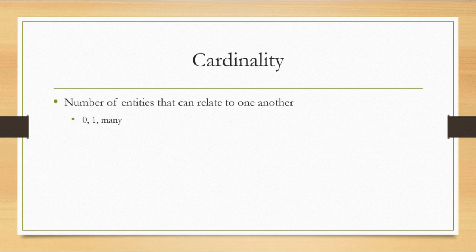Cardinality identifies how many entities can relate to one another. The valid values are zero, one, or many. For example, a class can have zero, one, or many students enrolled — if we're doing new enrollments, we create a class that initially has no students enrolled in it, eventually somebody will enroll, and later more people will enroll. Meanwhile, a state capital has only one state — Richmond is the state capital only of Virginia.